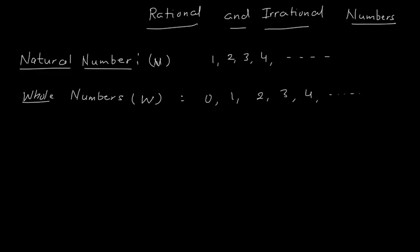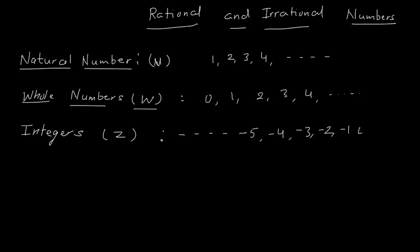Then we have a number system called integers, denoted by Z. We can have two categories of integers: positive integers and negative integers. In negative integers, we include negative numbers, like minus 5, minus 4, minus 3, minus 2, minus 1, 0, 1, 2 and so on. This is integers.